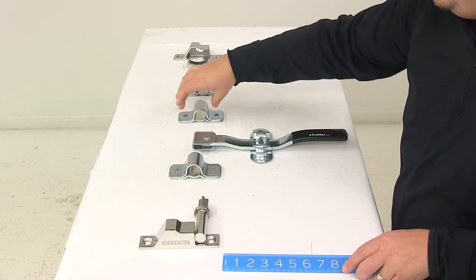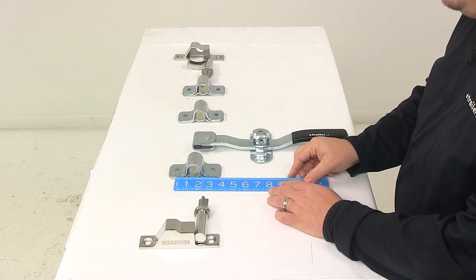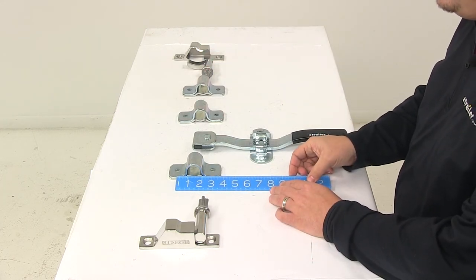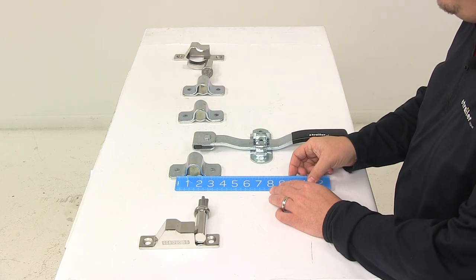And then the holes right here on all these brackets, those mount holes are separated on center by about three and one eighth of an inch.